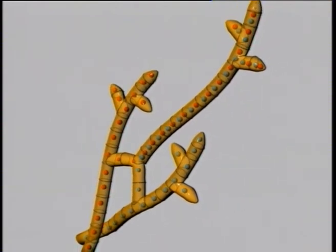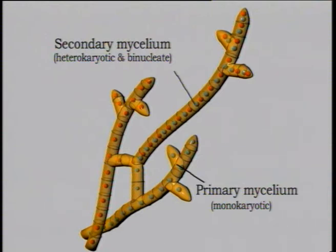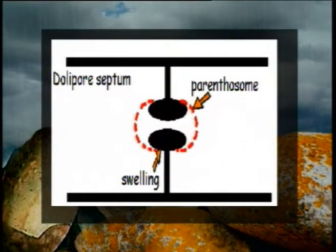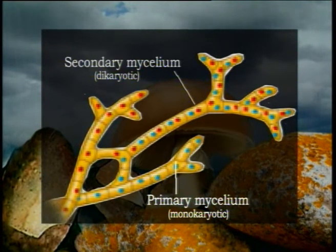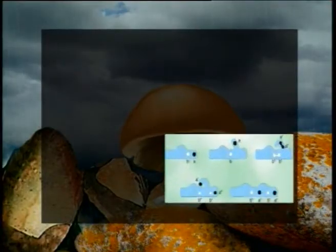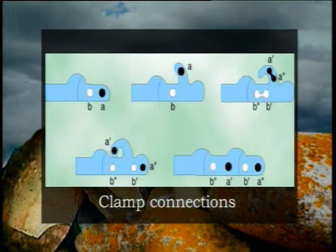The secondary mycelium is perennial, branched, and septate. The cells of this mycelium are heterokaryotic, binucleate, and contain dolipore septa. The primary mycelium can be easily differentiated from secondary mycelium by being monokaryotic, while the secondary mycelium is characterized by dikaryotic or binucleate cells. During growth and cell division, the dikaryon in Agaricus is maintained by a complex type of septum formation known as clamp connections, in which the simultaneous division of the dikaryon results in the formation of four haploid nuclei, two of each strain.